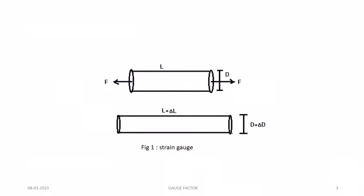We are considering a strain gauge which is made up of a circular wire having length L, denoted as capital letter L. The diameter of the wire is denoted as capital letter D. The area of cross-section is capital letter A. This circular wire has a resistivity, and the resistivity of the wire is denoted as rho.